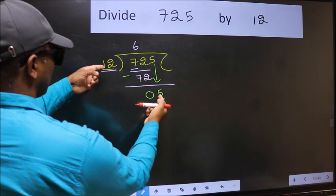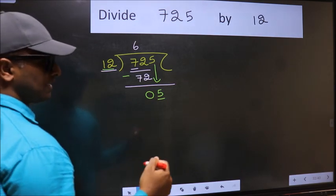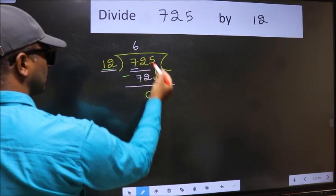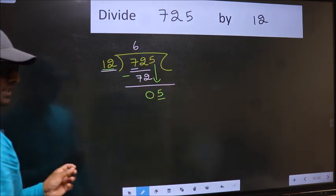5 is smaller than 12. So what many do is, they directly put dot and take 0. Which is wrong.